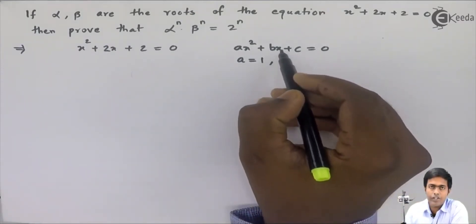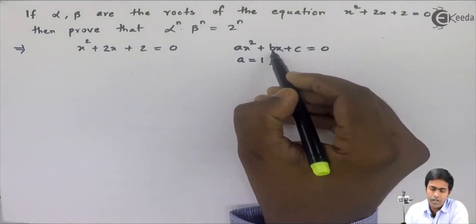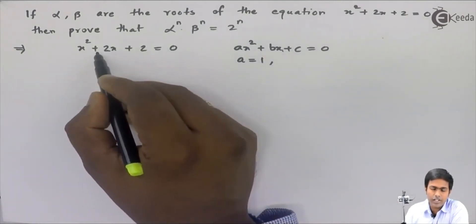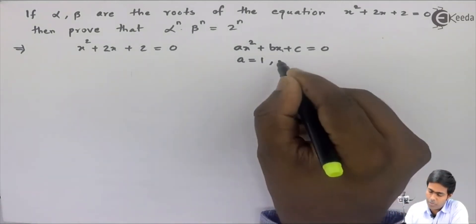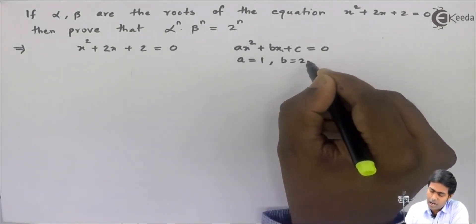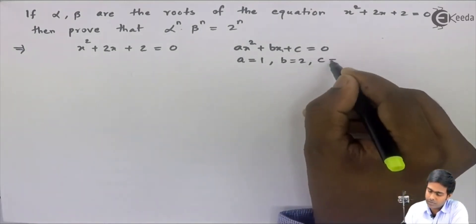Next, the coefficient of x is b. So here the coefficient of x is 2, so b becomes 2. And c is also 2.